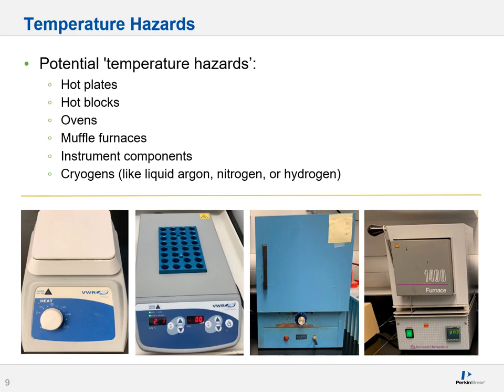Let's talk about potential burning hazards. Items such as hot plates, hot blocks, ovens, muffle furnaces, and sometimes even instrument components are rather hot to the touch, so be careful when you approach these. If you even suspect that any of these accessories or instruments has been set at any level of temperature, use a thermometer or other measurement device to assess whether it's dangerous. Sometimes evaluating these is easy if there's a temperature gauge up front, but other times you have to be more cautious.